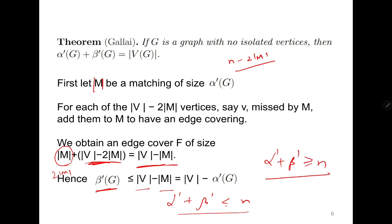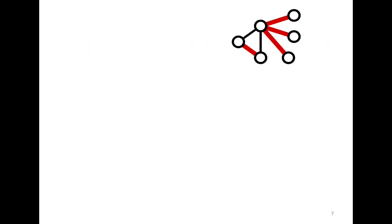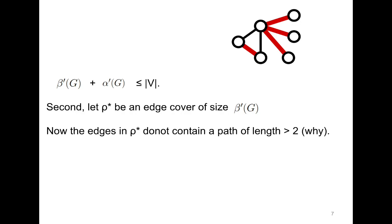To show the other inequality, we start with an edge cover. Let ρ* be the edge cover of size β'(G), which means it is a minimum edge cover. The first observation is that edges in ρ* do not contain a path of length greater than 2. Why? Because if there is a path of length 3, then the two outer edges already cover all four vertices, meaning the middle edge is not required. Since we are looking for the minimum edge cover, including the middle edge means it is not minimum.